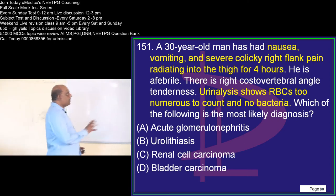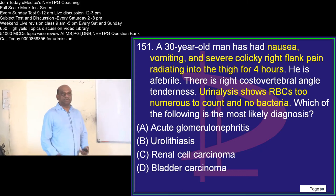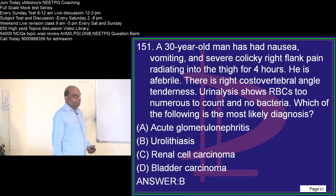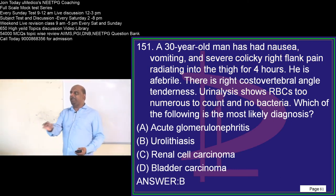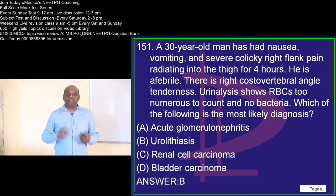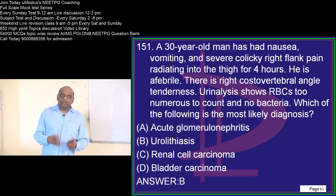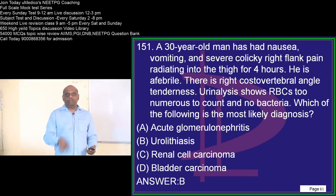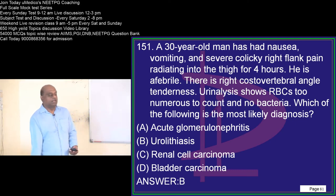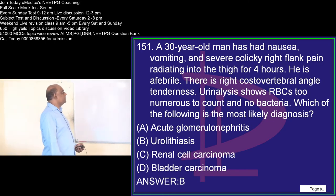A 30-year-old has nausea, vomiting, colicky right flank pain, and urinalysis shows RBCs too numerous to count with no bacteria — what is the most likely cause? Whenever a renal stone is present, it typically leads to erosion of the mucosa and development of hematuria. Isolated hematuria without bacteriuria is the key: in urinary tract infection, cystitis, or pyelonephritis, organisms would also be positive. But in her case, only isolated hematuria is present, so it is more likely to be urolithiasis.